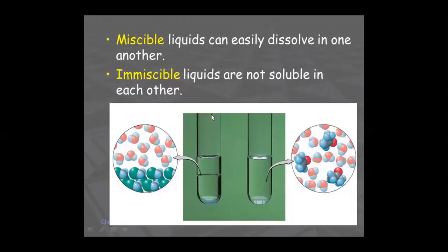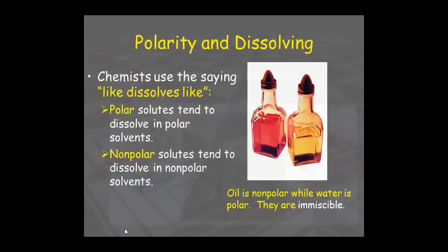Now let's come to miscible and immiscible liquids. Miscible liquids are those which can easily dissolve into one another — for example, water and milk mix together and you cannot identify which is which. Immiscible liquids do not mix easily — for example, oil and water: oil floats on top of water and they do not mix. That is called immiscible.